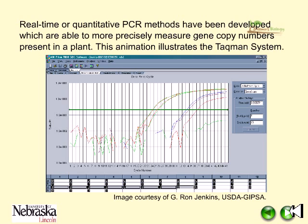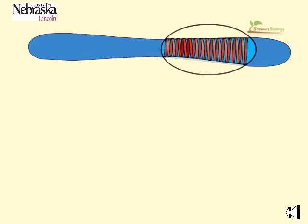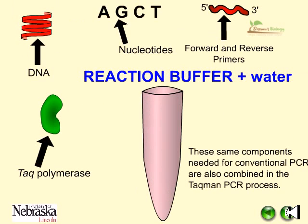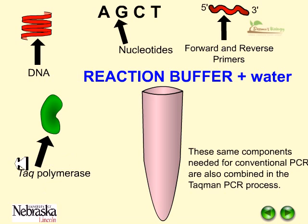This animation illustrates the TaqMan system. As in conventional PCR, the TaqMan system copies a segment of a chromosome's genetic code, such as a transgene. This is necessary to have enough copies to measure with laboratory methods, so scientists can then calculate the original copy number in the growing plant. The ingredients include DNA nucleotide sequences, forward and reverse primers, and Taq polymerase — the same components needed for conventional PCR are also combined in the TaqMan PCR system.